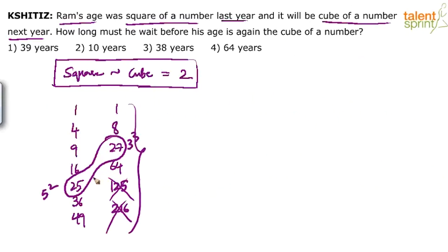The difference between 25 and 27 is 2. So, the square is 25 and the cube is 27, which implies the current age is 26. Because last year it was a square, and next year it will be a cube. So, current age is 26.